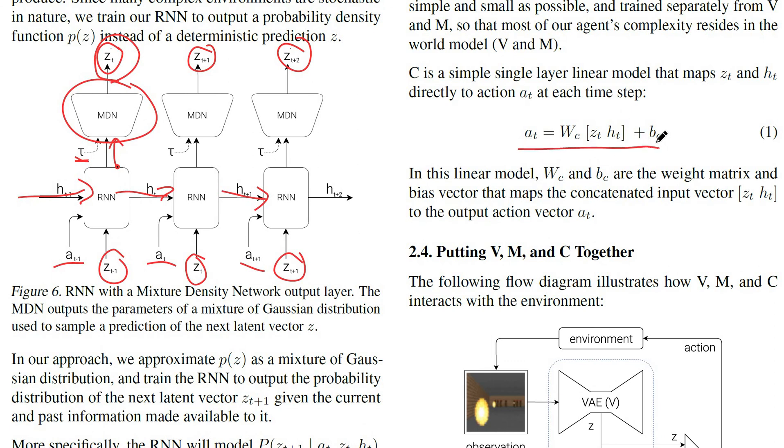The last component is the actual policy. And the actual policy here, as you can see, is, in their case, simply a linear model. The linear model will take the Z, which is the latent representation of the current state, and the H, which is the current state of the RNN that models the environment over time. It simply is a linear function of the two, gives you the action probabilities, or I guess the logits of the actions. So it's a really simple controller over these things. And they do this in order to show that the main part of the work is being done by this environment model. And given the environment model, you only need very few parameters to then learn a policy.